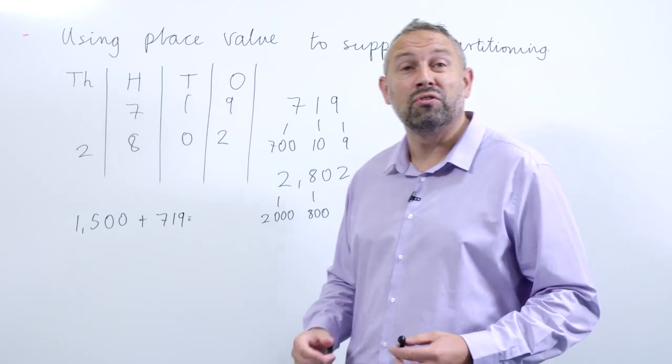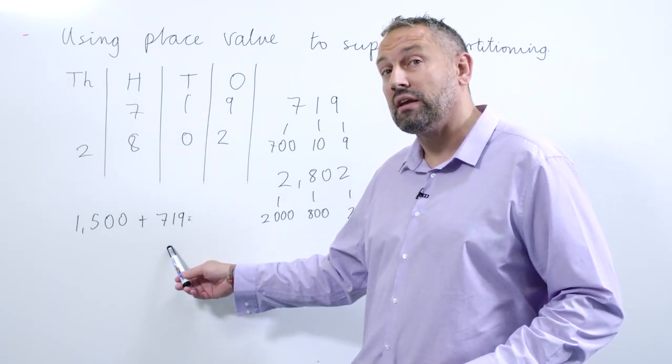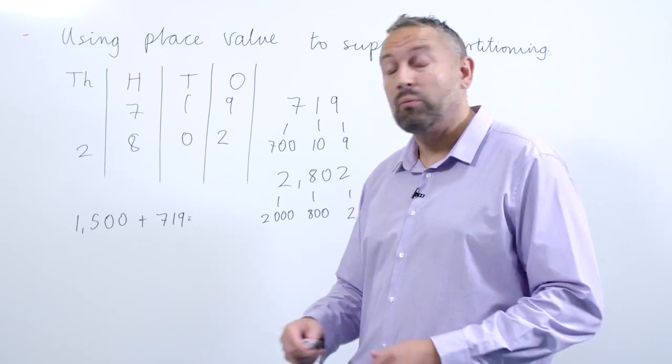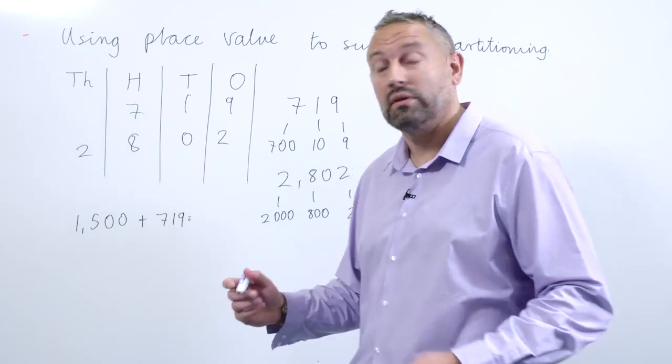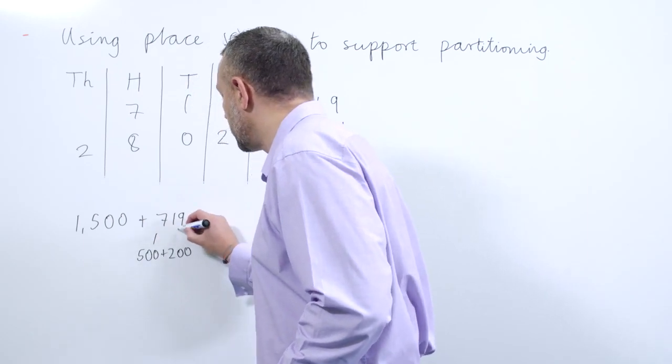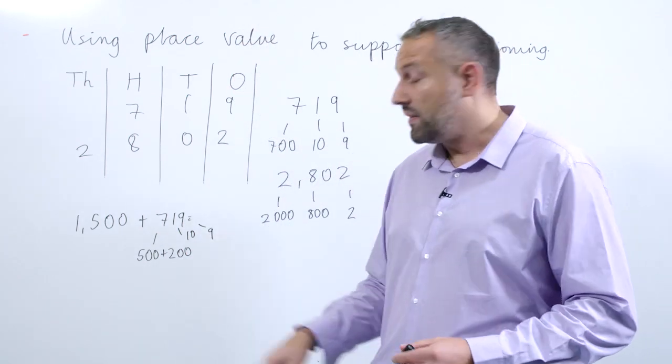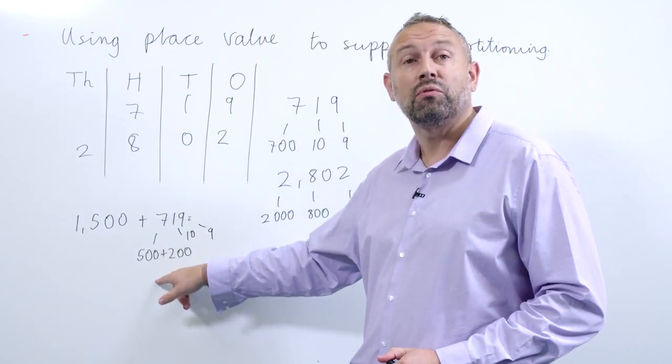We have 1,500 add 719. We can take 719 and we can partition that further into 500 add 200, and then 110 and nine ones. This is really useful because the children will find it much easier to add on 500 and then 200.